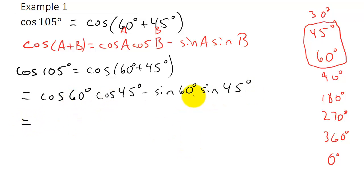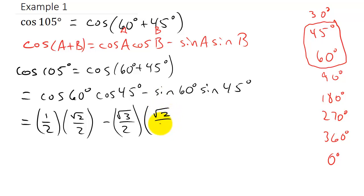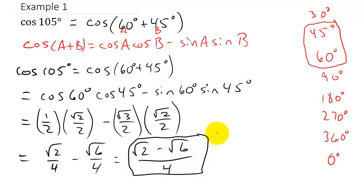We know these values: cosine of 60 is 1/2, cosine of 45 is √2/2, sine of 60 is √3/2, and sine of 45 is √2/2. Multiplying this out gives √2/4 minus √6/4. Since we have a common denominator, that combines to (√2 − √6) / 4, and that's the answer.